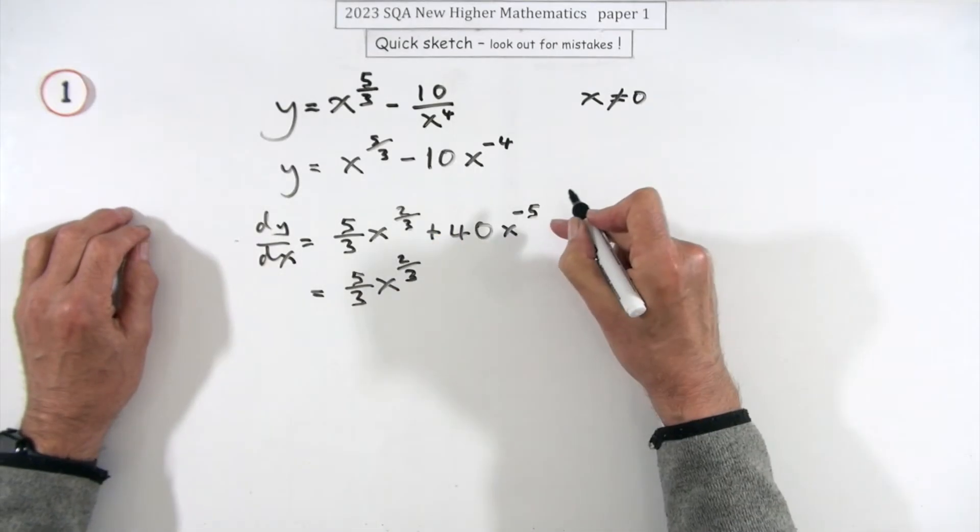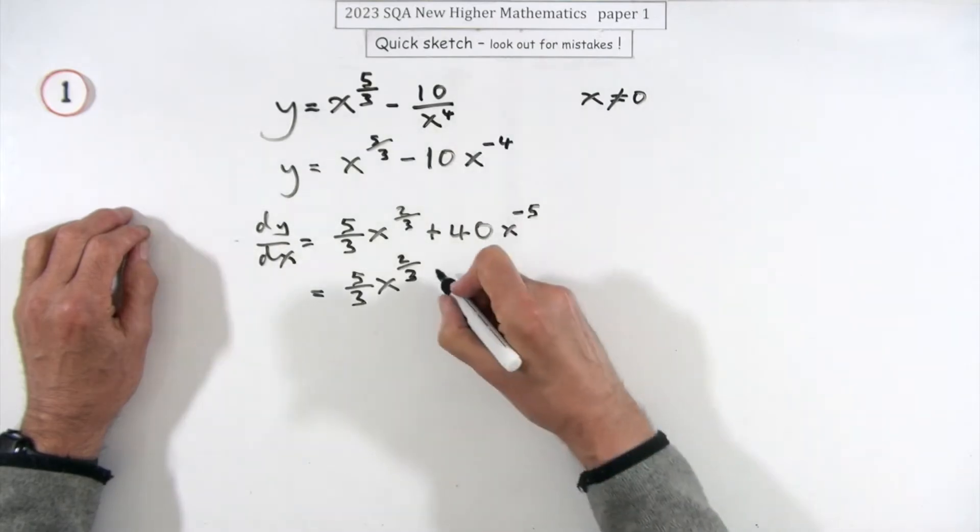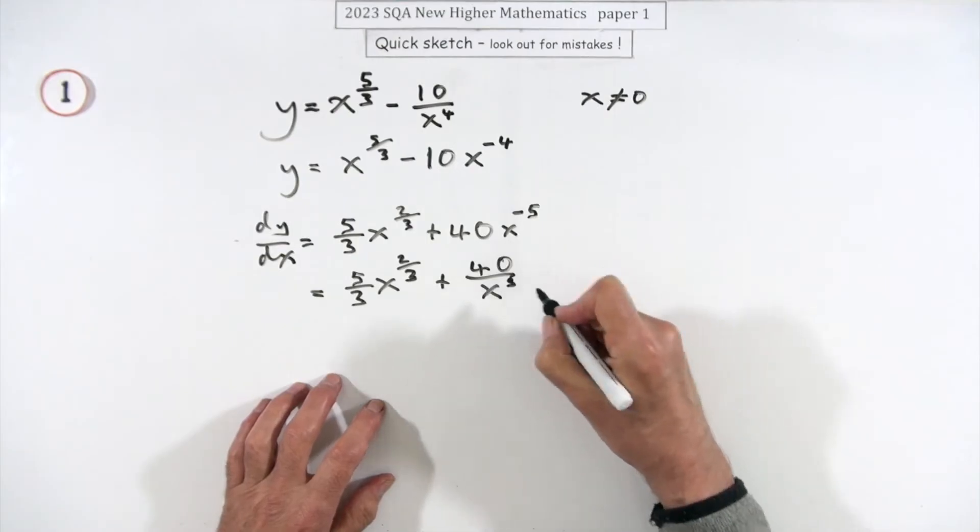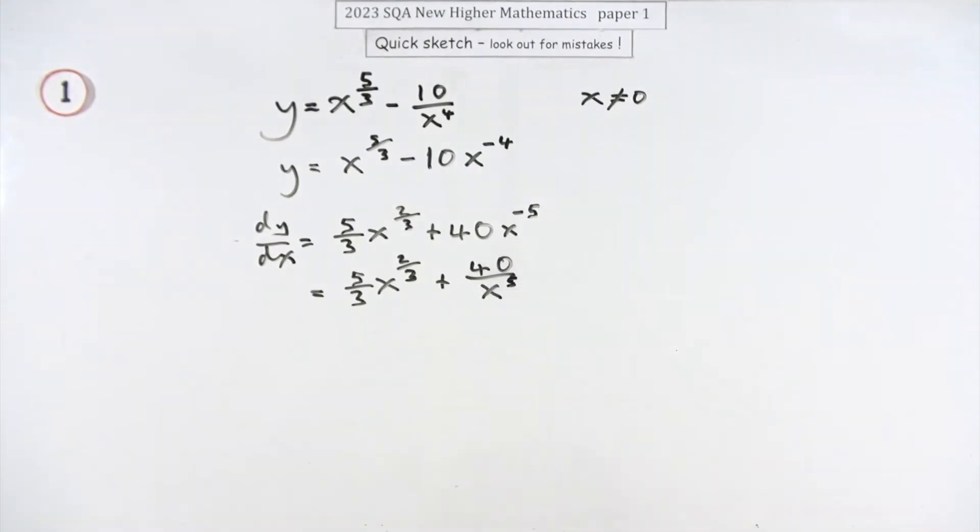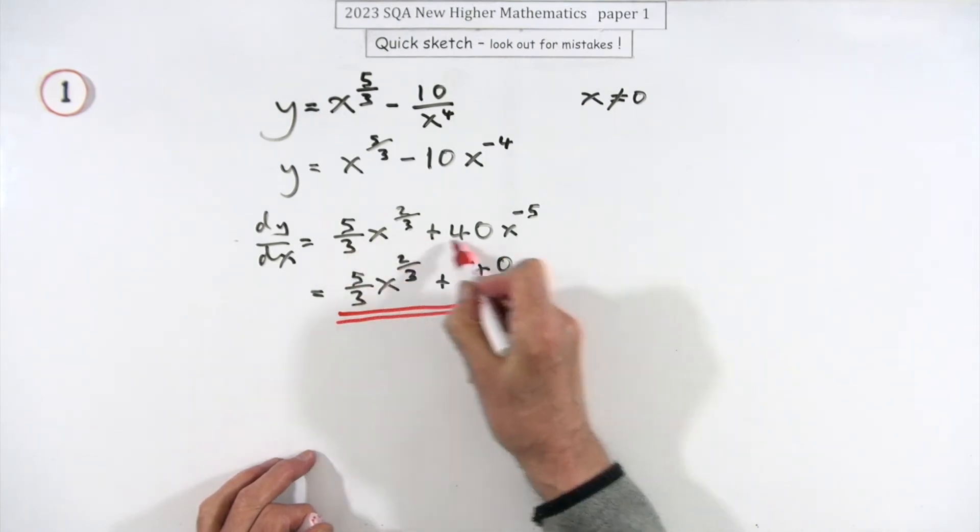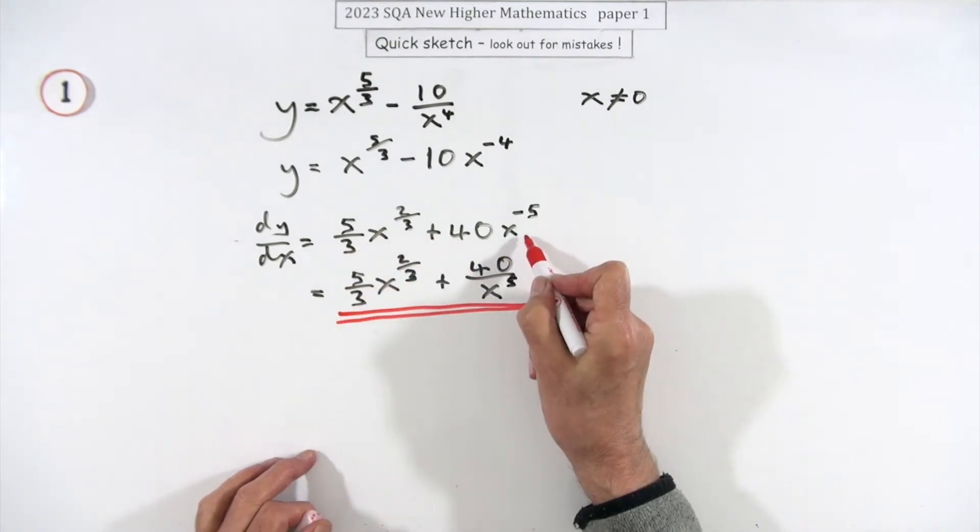But putting this back underneath, so plus 40 over x to the five. You'll probably find that that was sufficient to get the three marks.